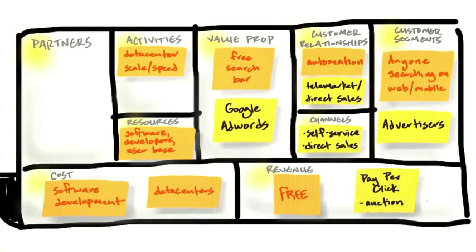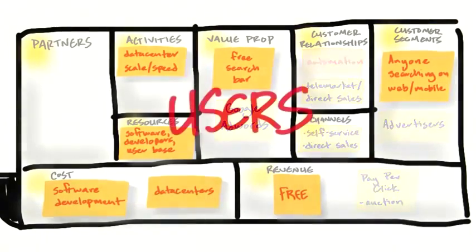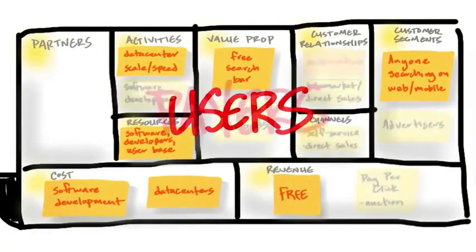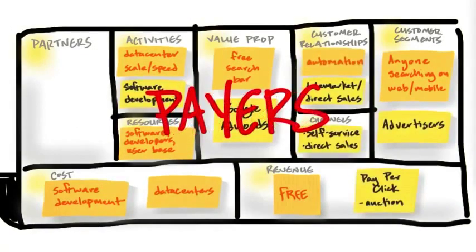These are the payers. So Google Search is what we call a two-sided market. There are users and there are payers.